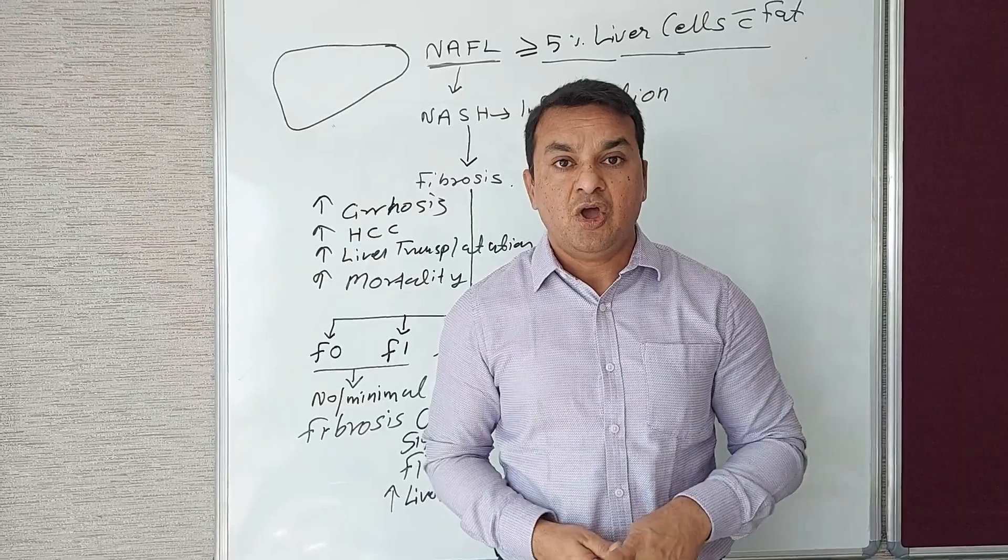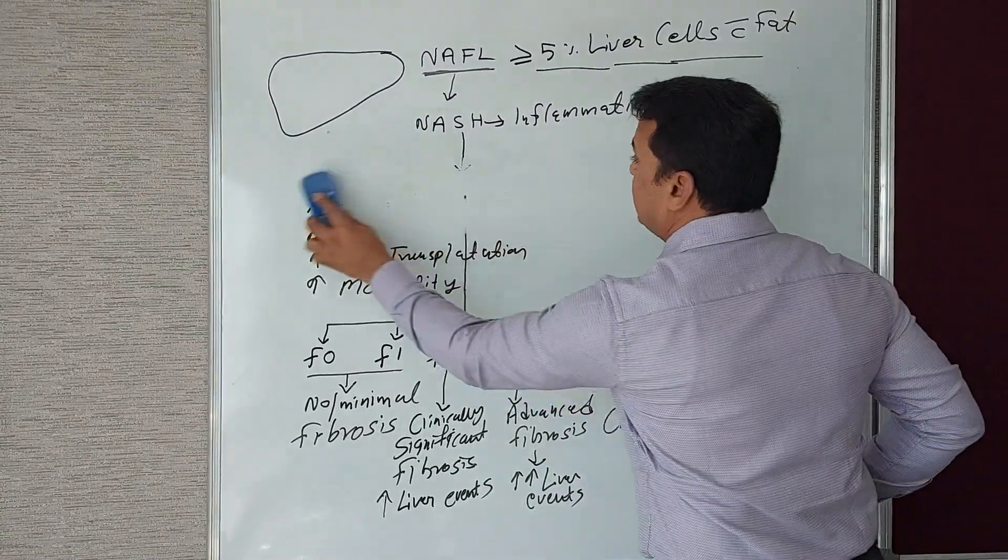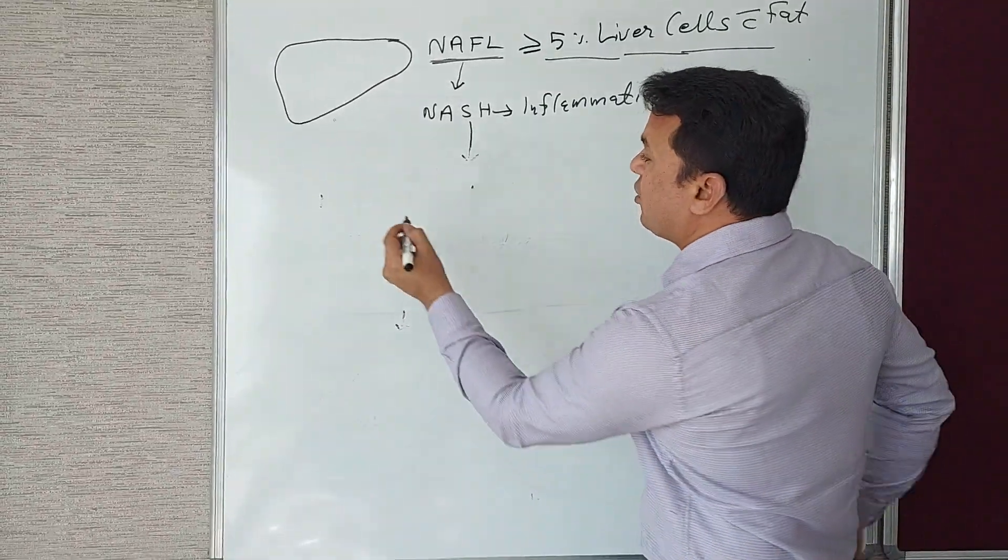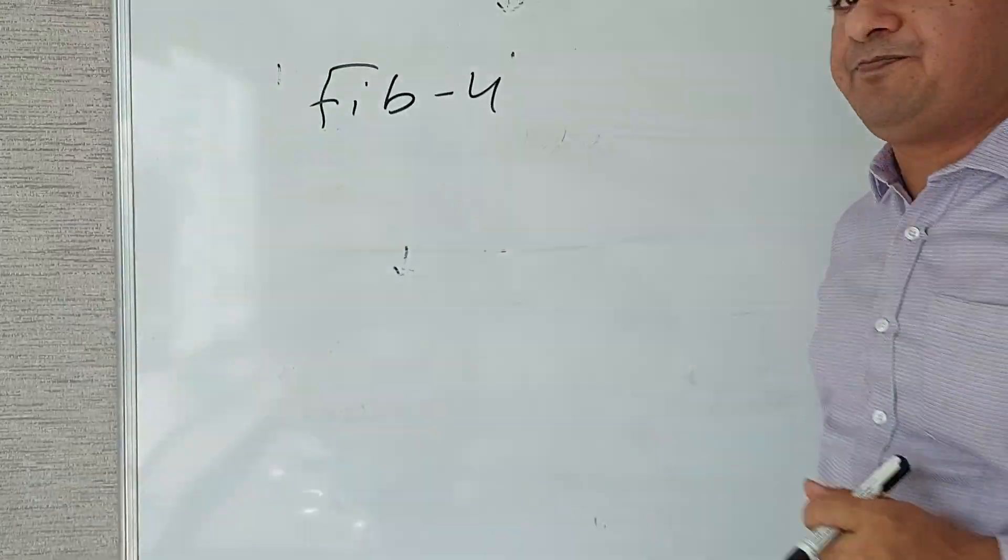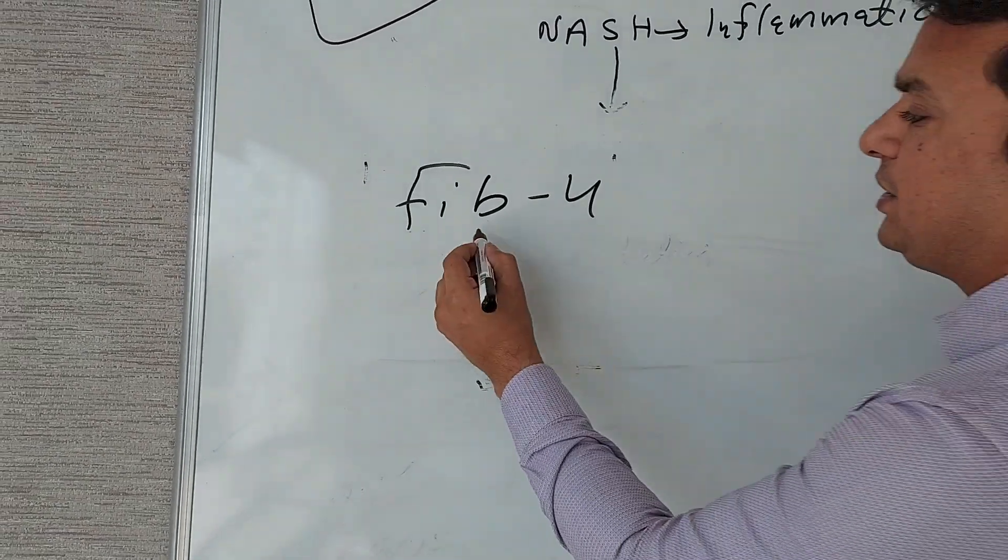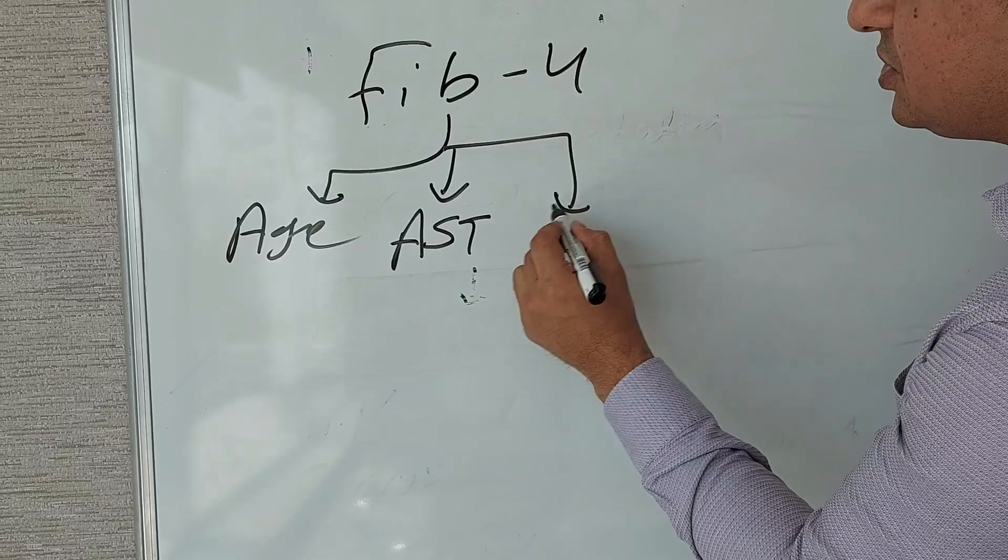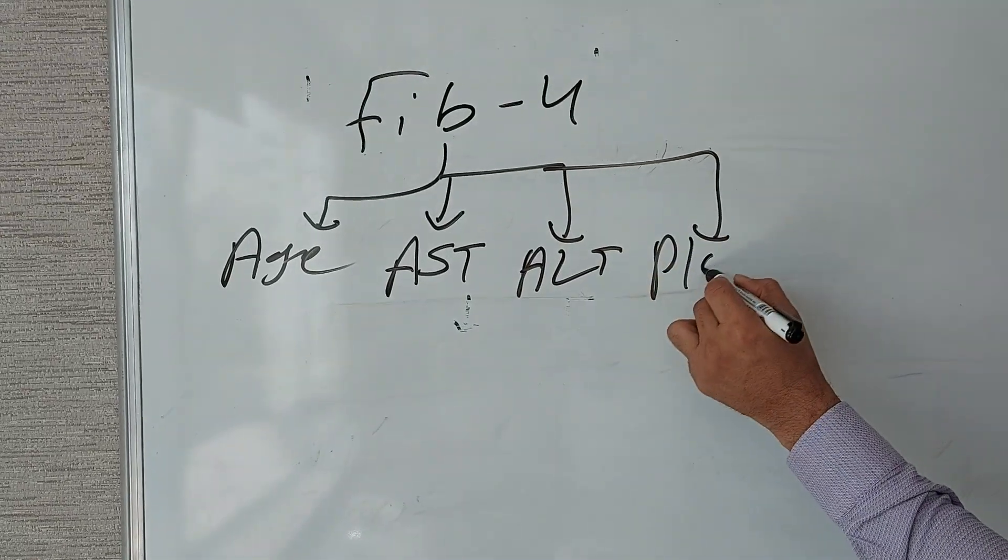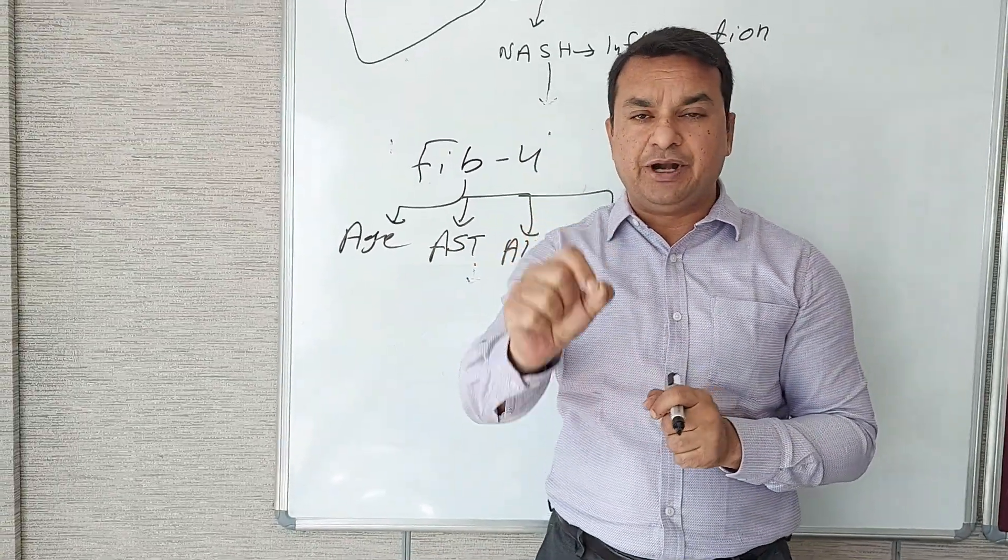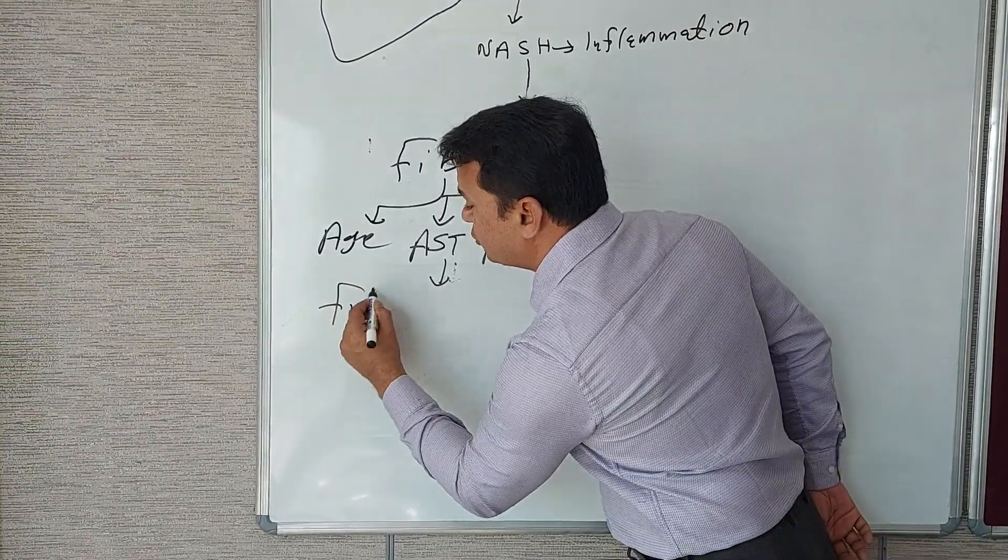we require some non-invasive techniques—we call it NIT (non-invasive technique)—by which we can easily do fibrosis grading. In our clinical practice, we have two important and simple non-invasive techniques to grade fibrosis in NAFLD patients. Number one: FIB-4 scoring. FIB-4 is a very simple calculator scoring tool. It requires very simple parameters: age of the patient, liver enzymes (AST and ALT), and platelet counts. You google the FIB-4 score, open